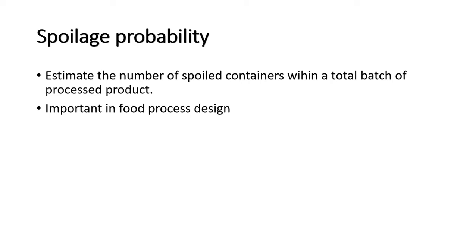Next, let's talk about spoilage probability. In the food industry, food scientists need to design the food process to extend shelf life and prevent spoilage of food products. Spoilage probability is important to estimate the number of spoiled containers within a total batch of processed product, and it is used in process design to achieve desired effectiveness and results.